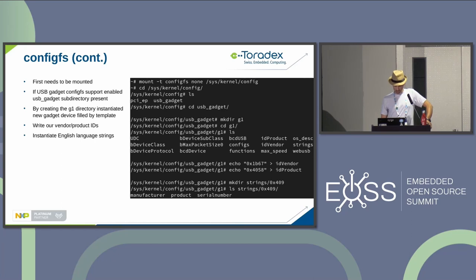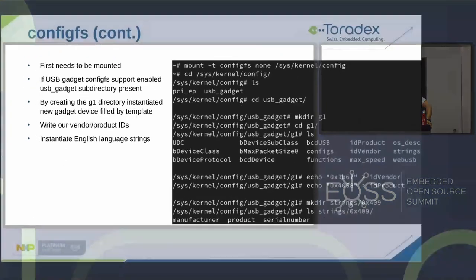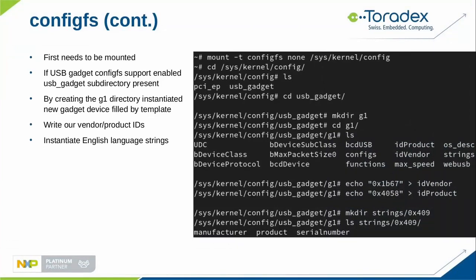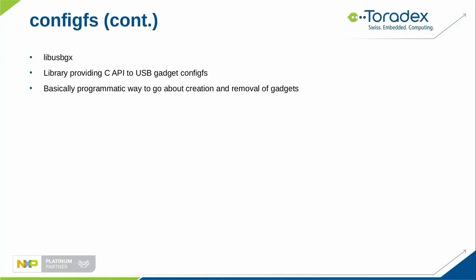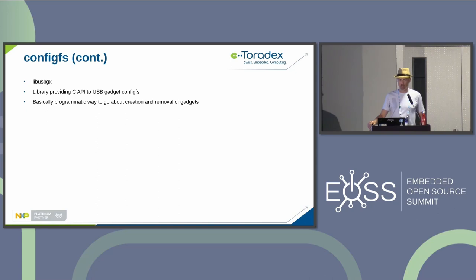Make sure configFS is mounted. The USB gadget configFS will automatically have a USB gadget folder. Create a G1 directory to create a new gadget, then write your product IDs, strings, and other configuration. Create a function instance — in this example, an NCM network class function. Then create the configuration and link the function to it, then hook it up via a symlink to your actual UDC instance. If you don't want to do this manually, there is a programmatic library called libUSBGX.